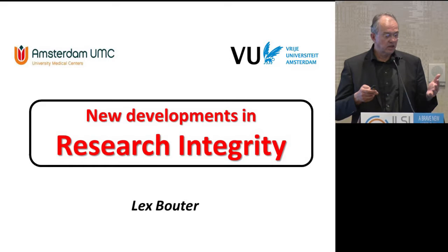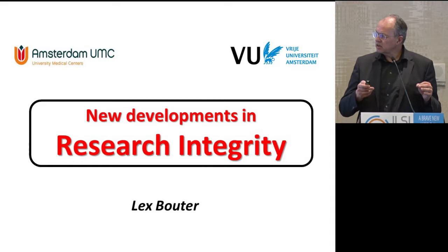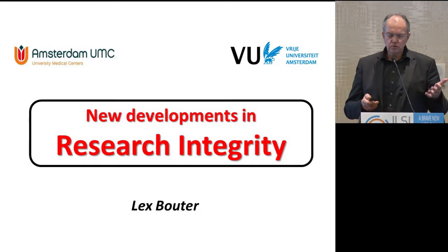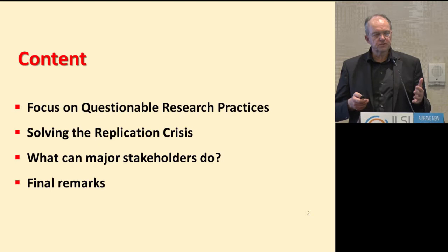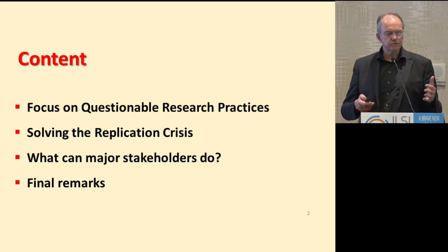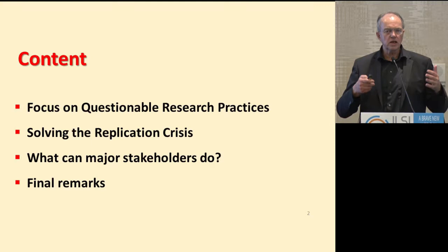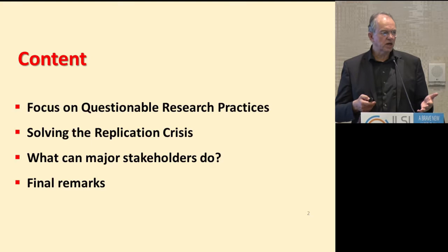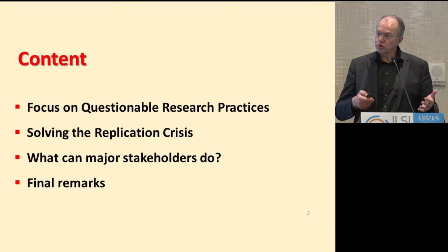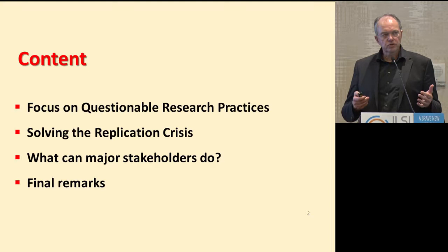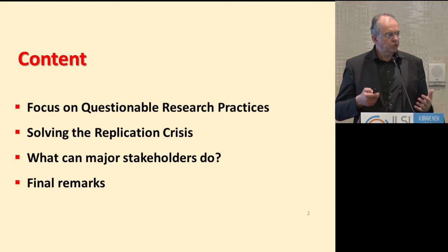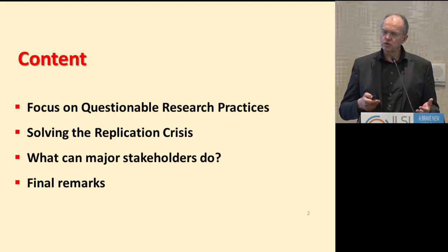My assignment for this afternoon is to talk about new developments in research integrity. I've put a few things on the menu. One is a shifting focus from the bad stuff — the deadly sins of science like fabrication, falsification, and plagiarism — toward more low-level questionable research practices, and I'll argue this is an important shift. Second, I'll say a few things about the replication crisis and allude to the most important solution: being more transparent. Then I'll say a few words about what stakeholders can do. There are no magic bullets — we need to collaborate with many stakeholders together to solve the issues.